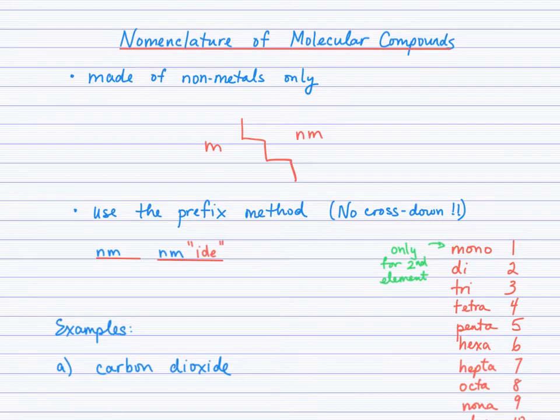Molecular compounds are made of non-metals only. So if you recall, the staircase separates the metals from the non-metals. And just a quick reminder that we're working now with compounds that contain non-metals only. Remember hydrogen, way over here in group 1, is also a non-metal.